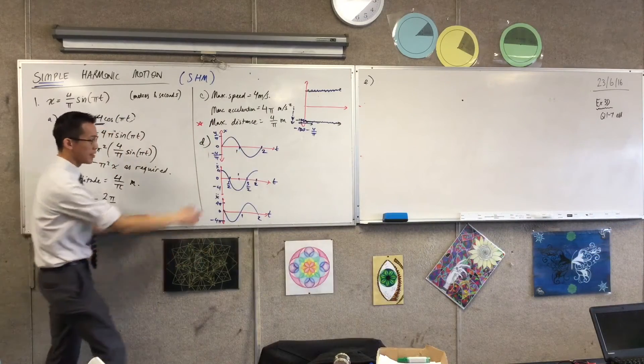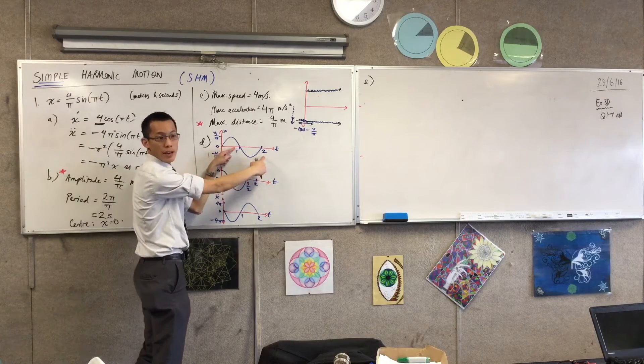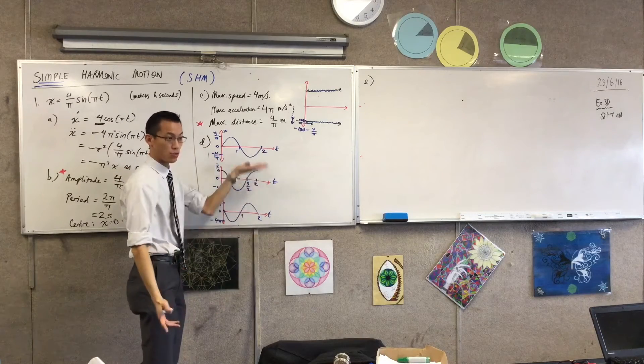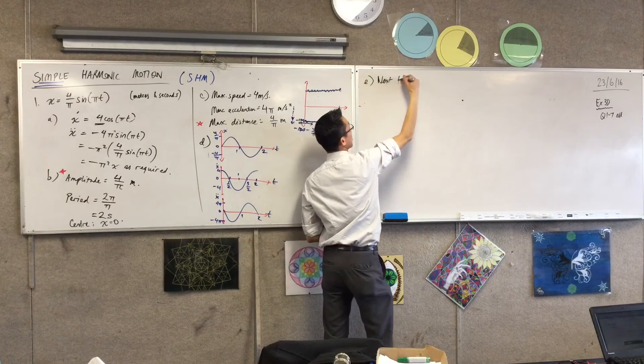So when they say next two times, they clearly mean not this one, but this guy and this guy. Yeah? Which we've already put on because we did a good job of graphing. Okay? So part E, next two times, and origin.